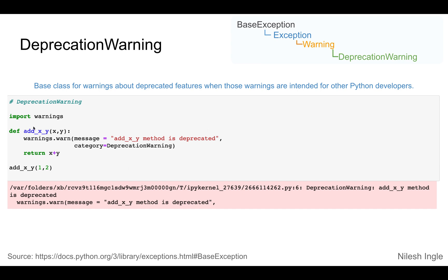For example, here we are creating a function called add_XY. Let's say we are trying to deprecate this method and create another function to perform the same task. We can warn the user using warnings.warn(), specifying that the add_XY method is deprecated.